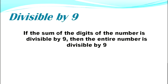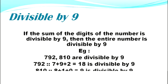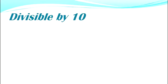Divisible by nine: if the sum of the digits of the number is divisible by 9, then the entire number is divisible by 9. Example: 792 — since 7 + 9 + 2 = 18, which is divisible by 9. And 810 — since 8 + 1 + 0 = 9, which is divisible by 9.